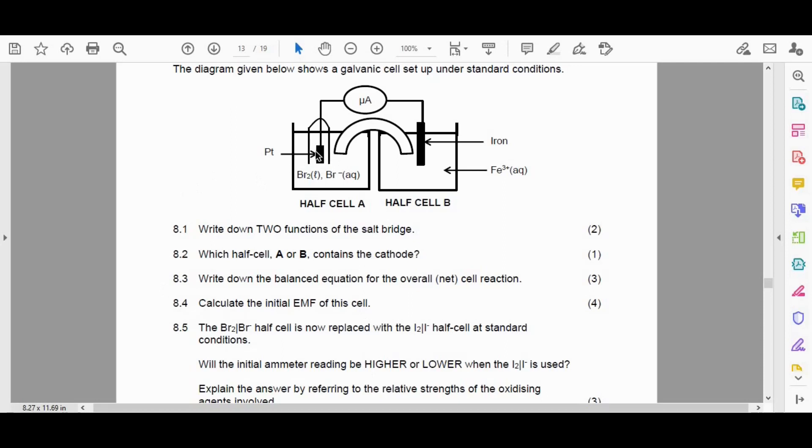But definitely the substance that's present in half cell A is Br2 liquid, and then it goes to Br minus in aqueous solution. Okay, so that's the substance that we can see that is being reduced here.